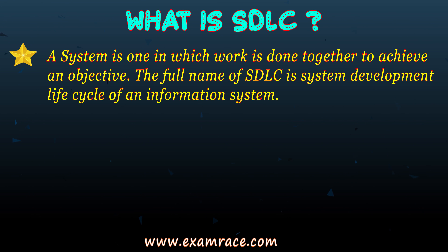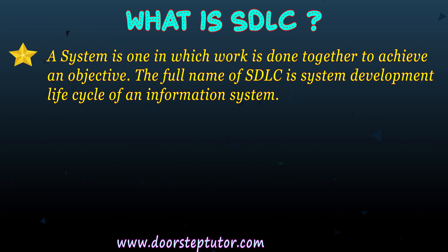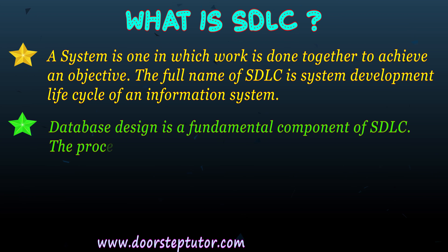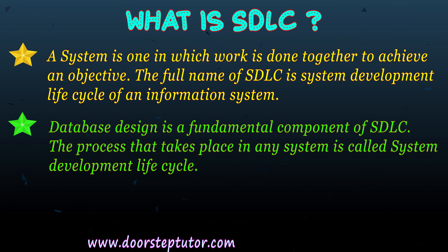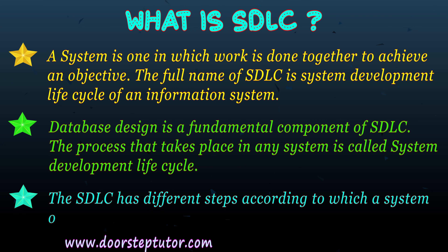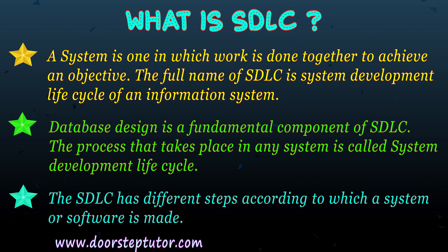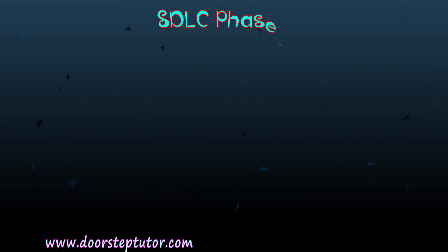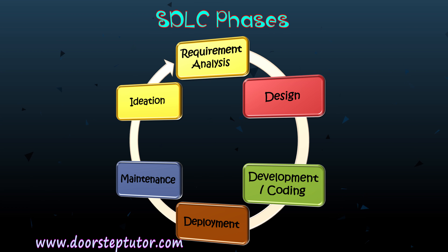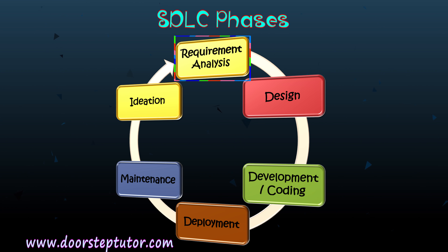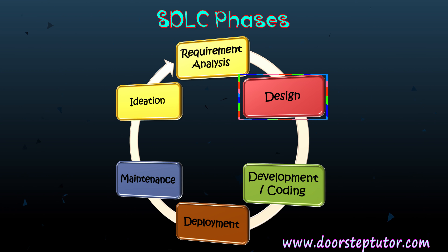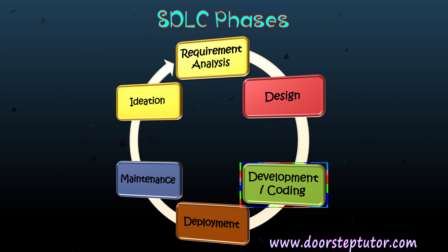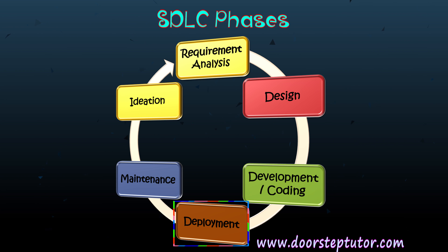SDLC means that various sub-components are followed one by one and they work in a coordinated manner to achieve the final output according to our requirement. The SDLC has various different steps or phases: the first phase is requirement analysis, then design, followed by development or coding, then deployment, and after that maintenance of the system.